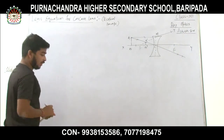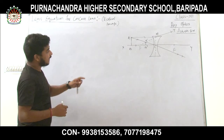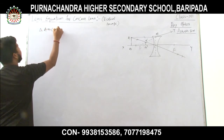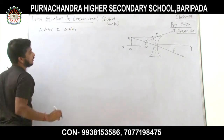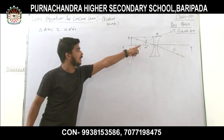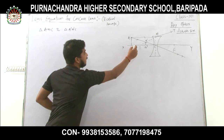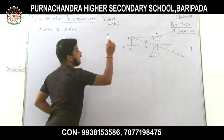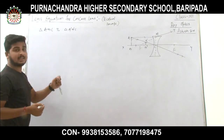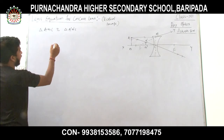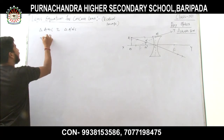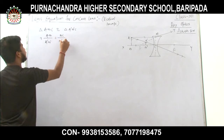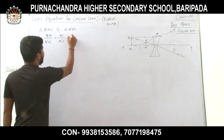Now let's derive the Lens Equation. Triangle ABC is similar to triangle A dash B dash C, because angle B is 90 degrees, angle B dash is also 90 degrees, and angle BCA equals angle B dash C A dash — a common angle. By angle-angle similarity, these two triangles are similar, so: AB / A'B' = BC / B'C. Mark this as Equation 1.